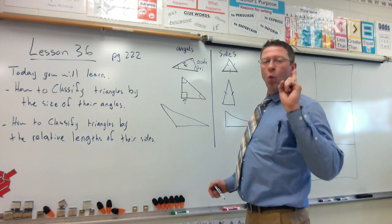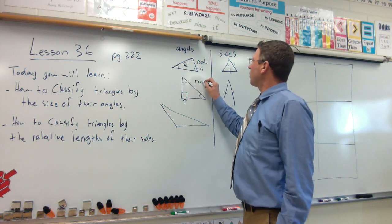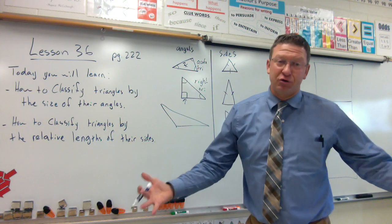To be a right triangle, you only need to have one right angle, and then that would be called a right triangle.